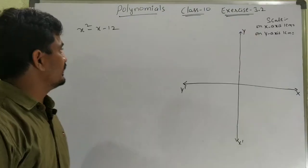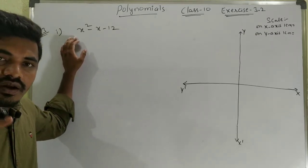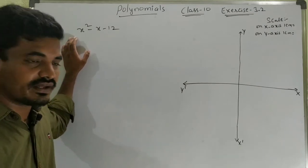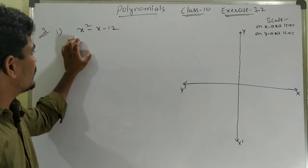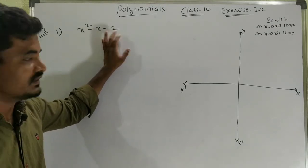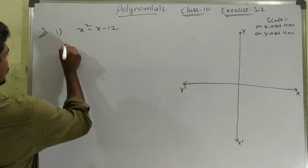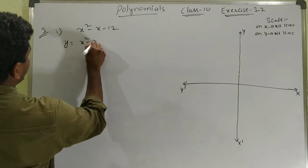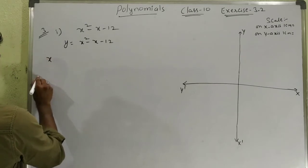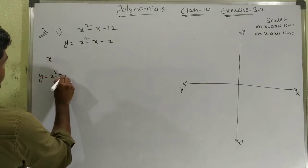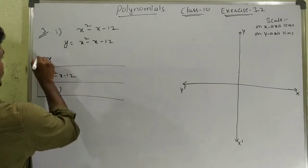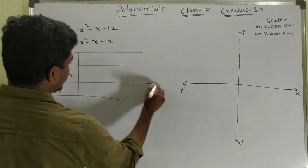Okay, now the second bit: draw the graph of the given polynomials. These are complete quadratic polynomials. The first question is x² − x − 12. For this graph, y = x² − x − 12. We need a table of values — find x and y values, which is important.